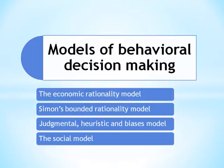The different models of behavioral decision-making according to the degree of rationality are: the Economic Rationality Model, which is the most rational approach; Simon's Bounded Rationality Model; the Judgmental Heuristic and Biases Model; and the Social Model, which is the least rational approach.